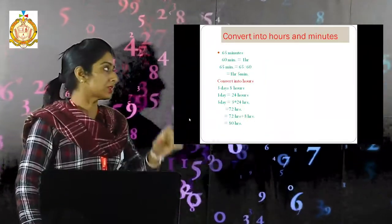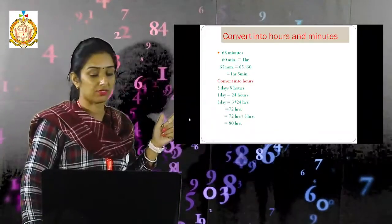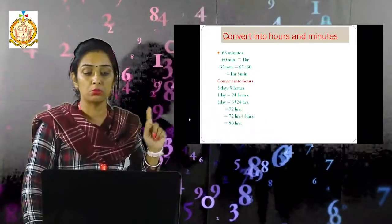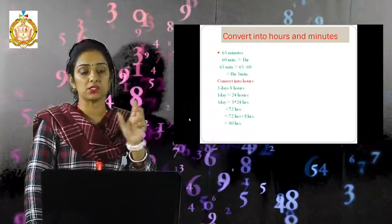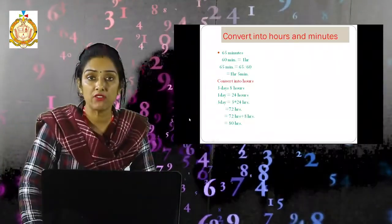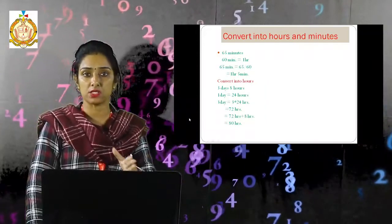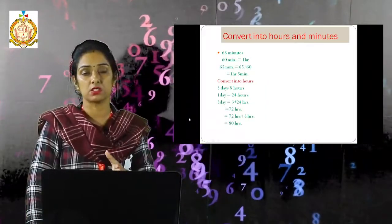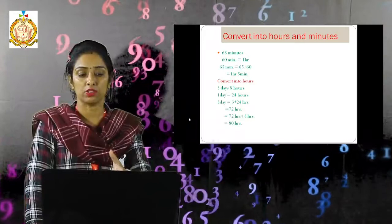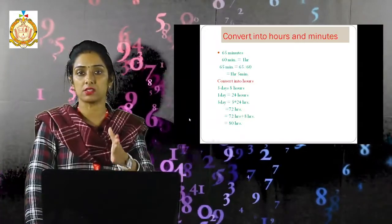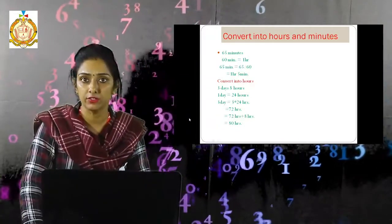Now convert into hours and minutes: 65 minutes. We know 60 minutes equals 1 hour. We have 65 minutes, so divide 65 by 60. We get 1 hour and 5 minutes.